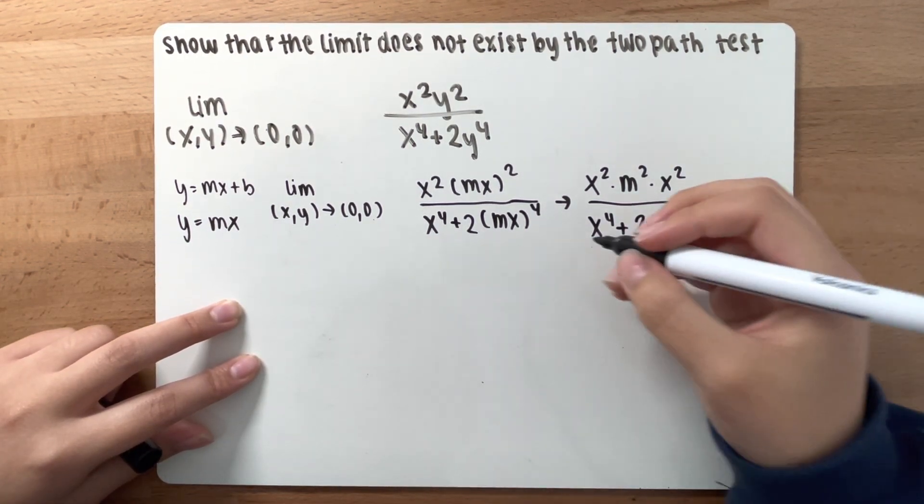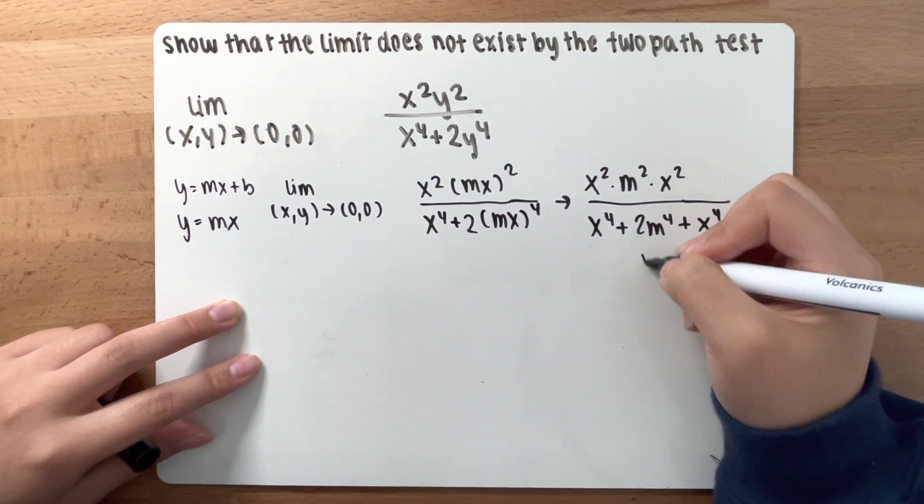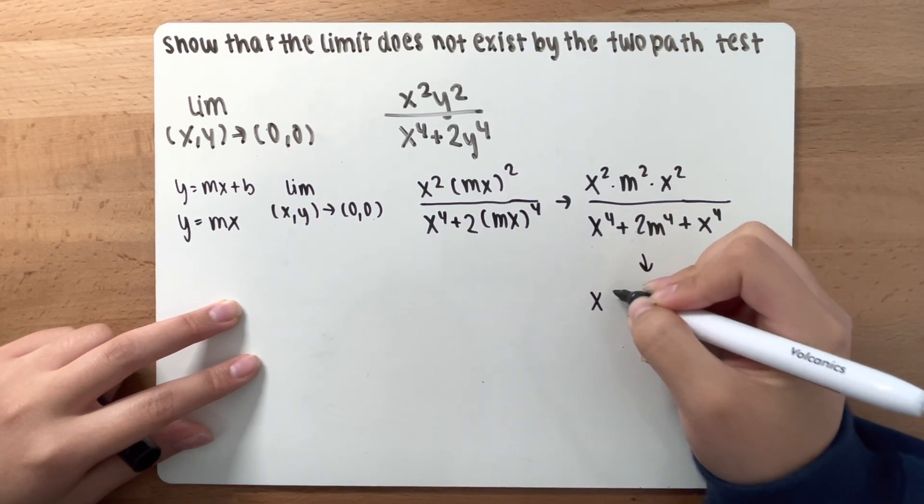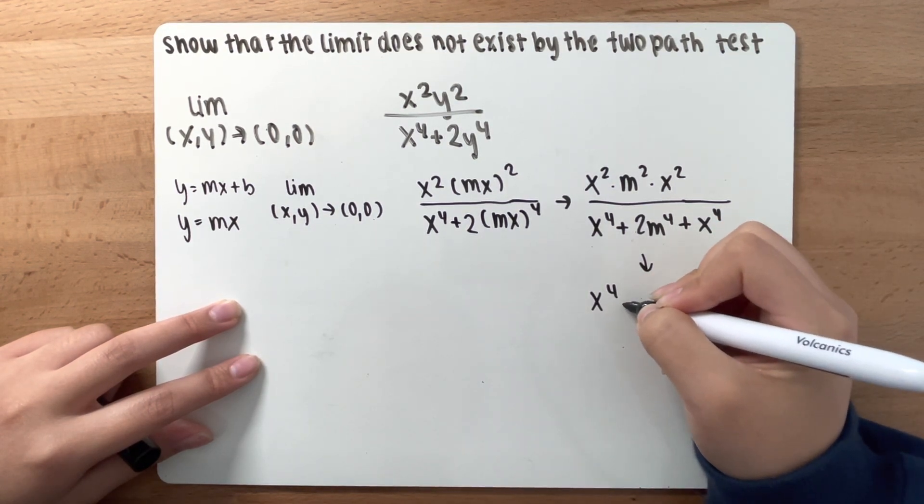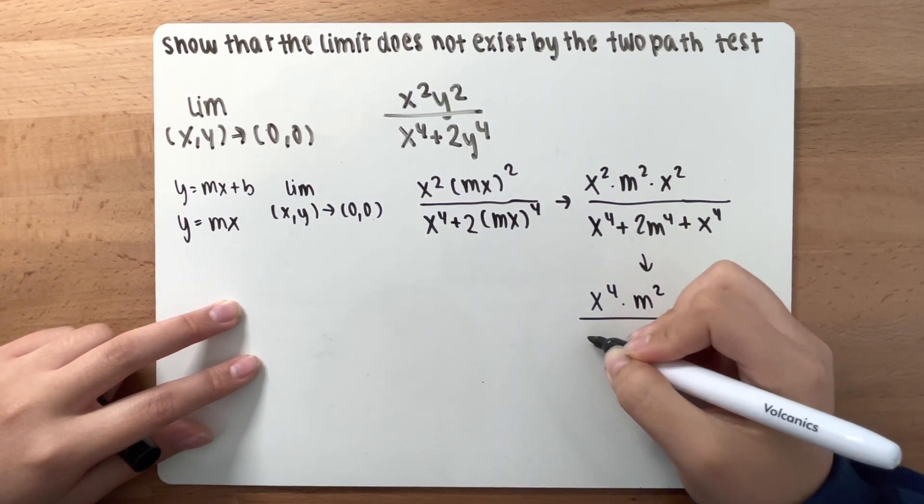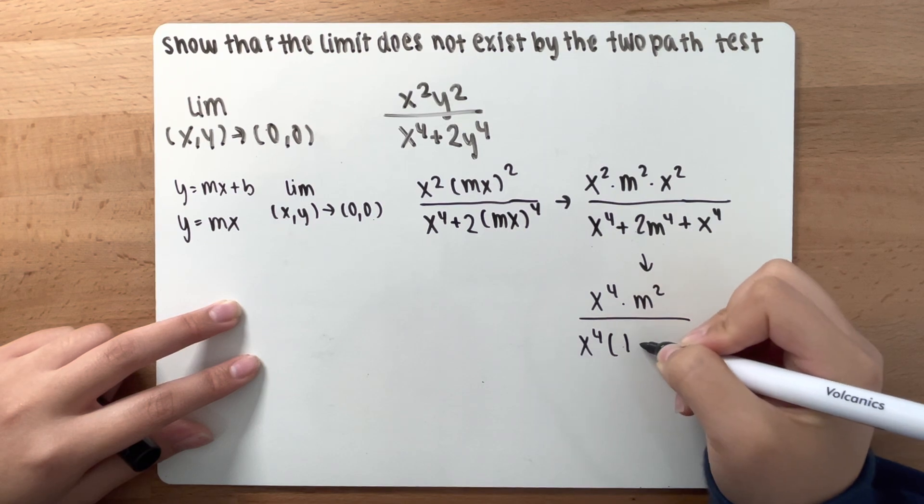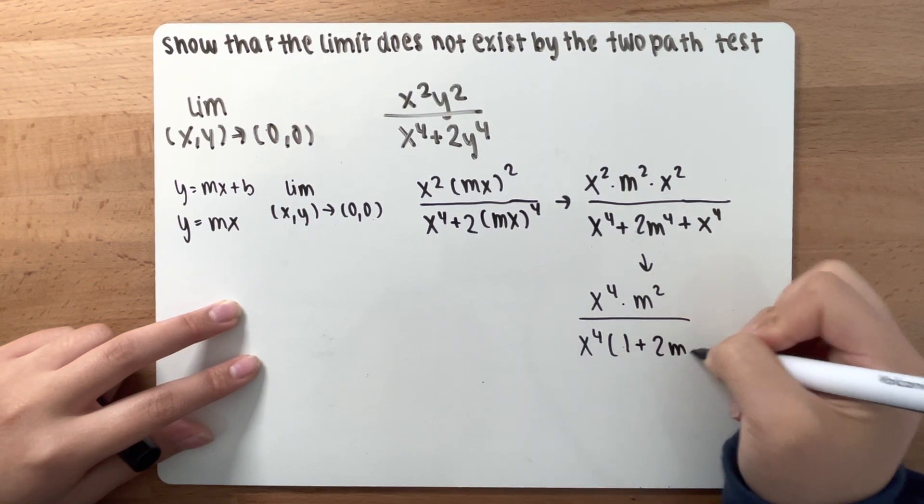All right, now, with this, you can combine the like terms. Therefore, you are going to have x to the fourth power times m squared over x to the fourth power times 1 plus 2m to the fourth power.